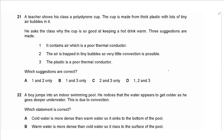Question 21: A polystyrene cup is made of thick plastic with tiny air bubbles. Three suggestions explain why it keeps a drink warm: (1) it contains air, which is a poor thermal conductor; (2) air is trapped in tiny bubbles, so very little convection is possible; (3) the plastic itself is a poor thermal conductor. All three suggestions are correct. Answer is D.